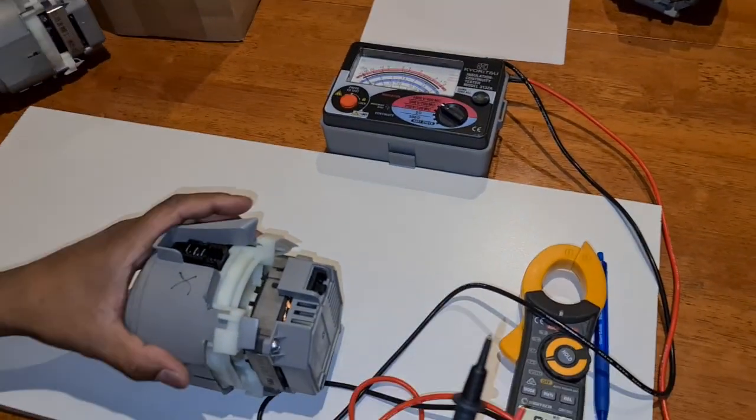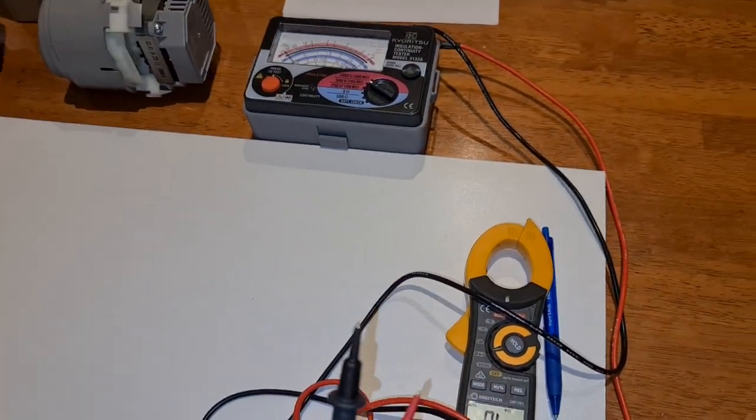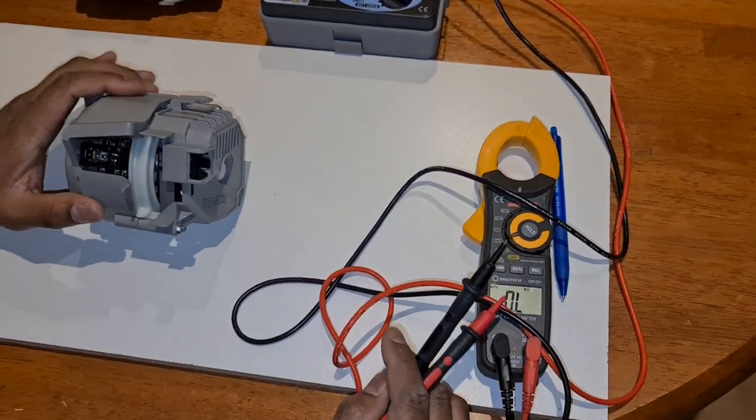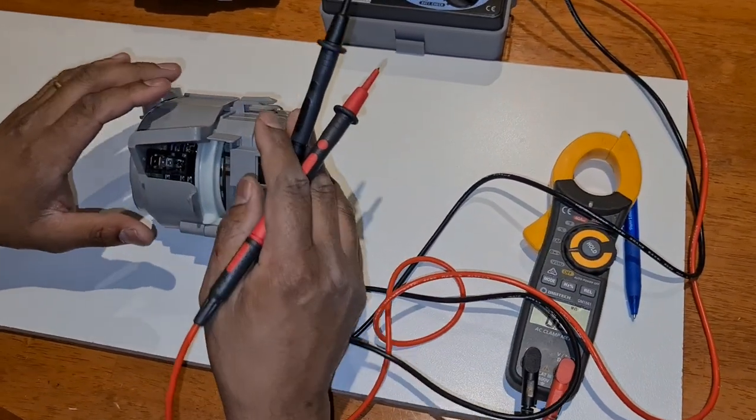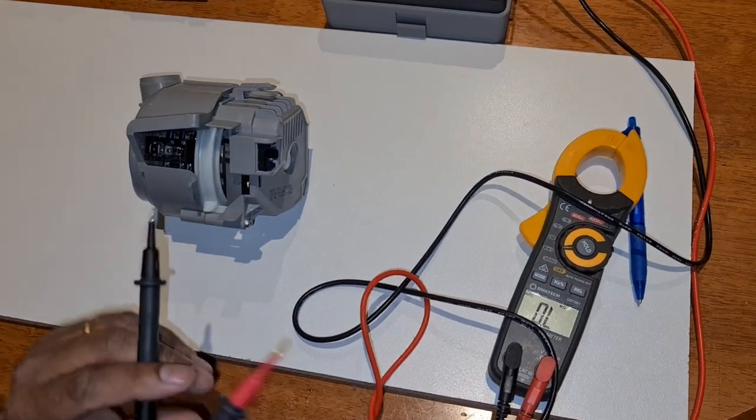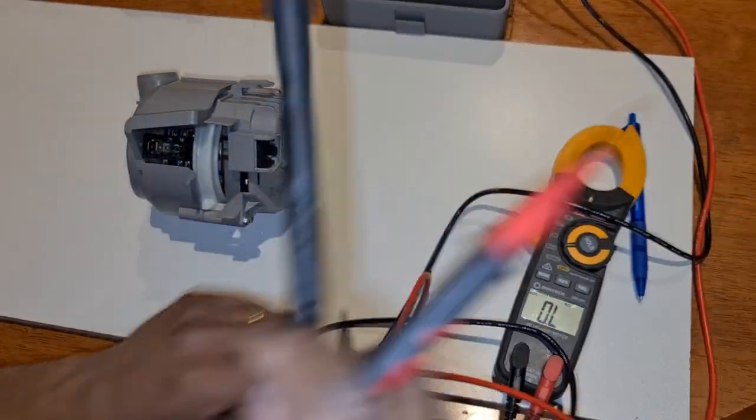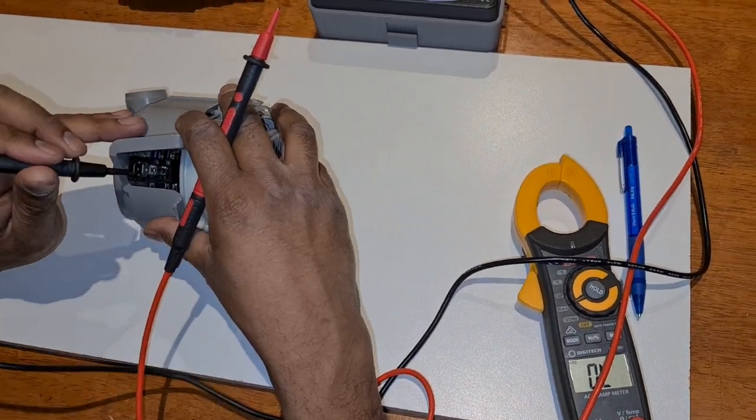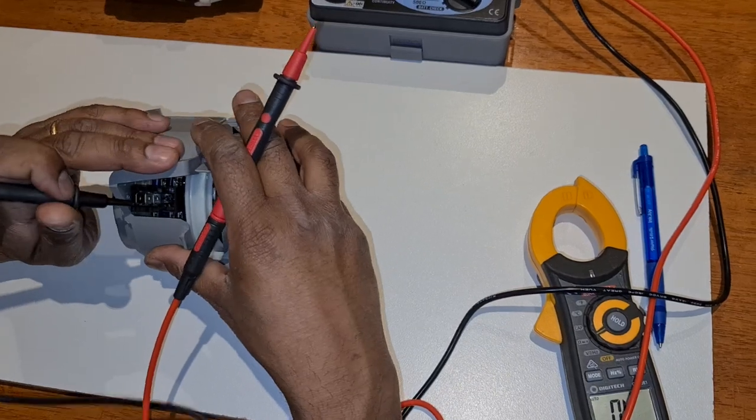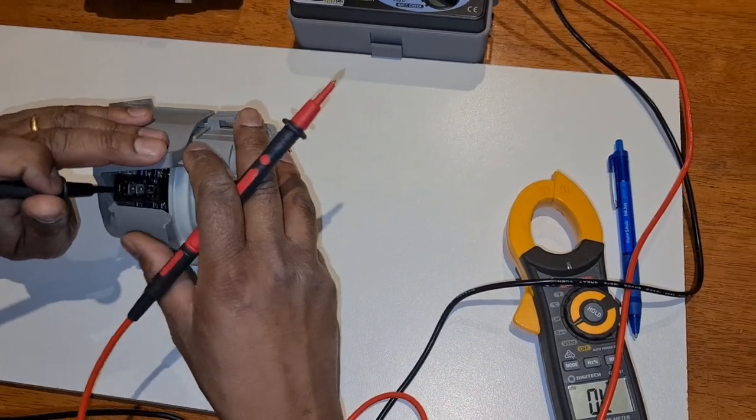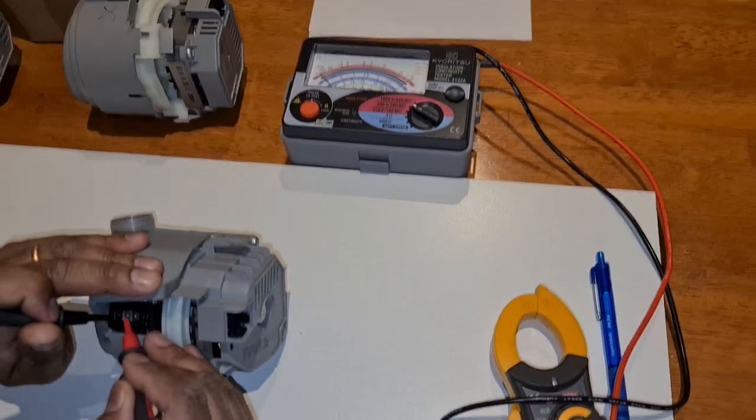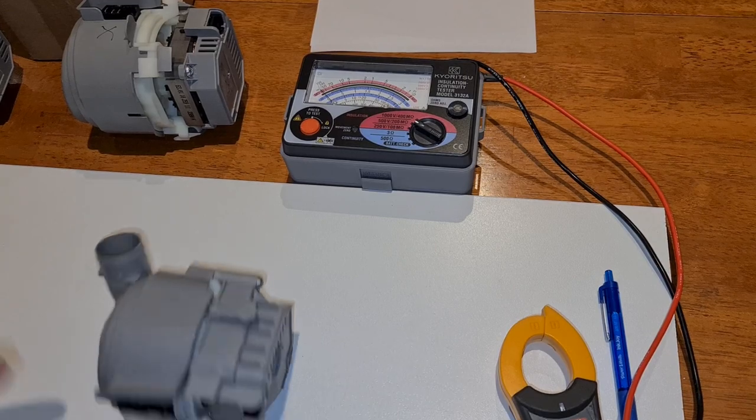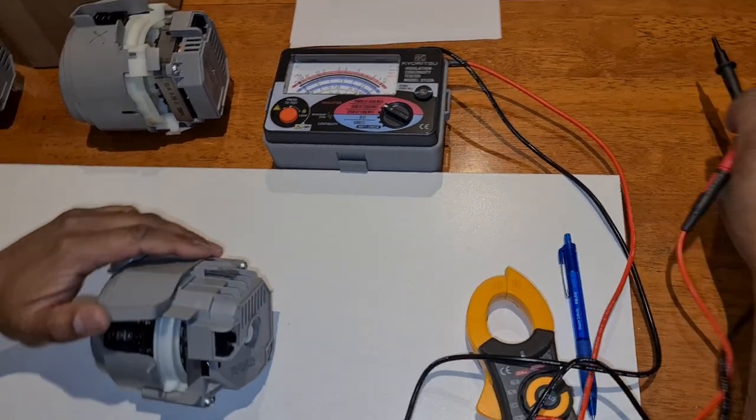So here again, I have another Bosch heat pump. This is slightly smaller in dimensions, but then again, we can use the same principles to test. So let me just... So once again, earth terminal. So our insulation resistance is very good on this pump. But this pump is still bad.